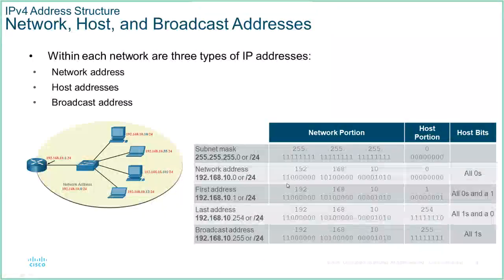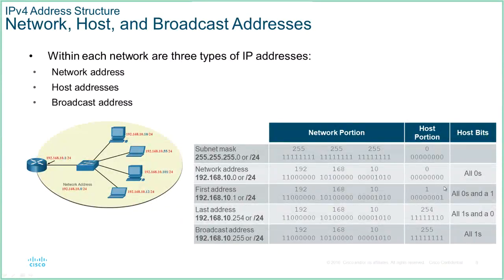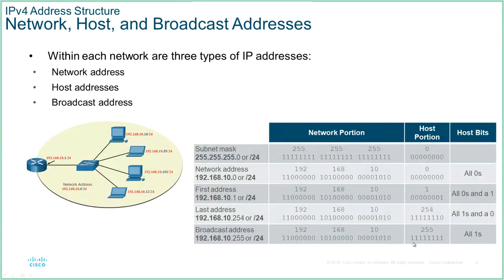After the ANDing function you get the network address. So 168.10.0/24 provides us with this entire 8-bit space for addressing. The rules are: we have a network address, a broadcast address, and everything in between is a valid host address. Where it's all zeros in the host portion, this is the network address. Where it's all ones in the host portion, that's the broadcast address. Anything in between is a host address.